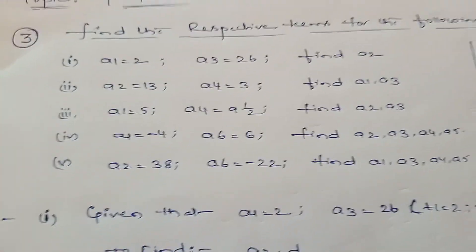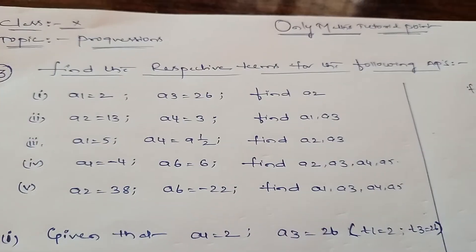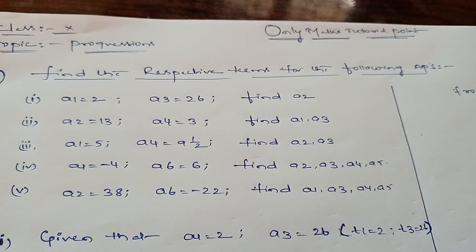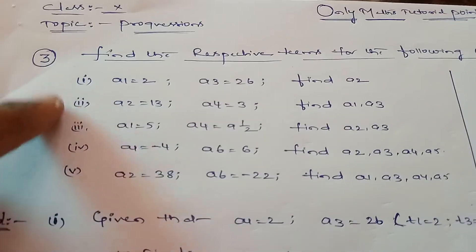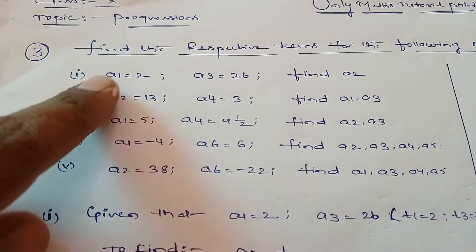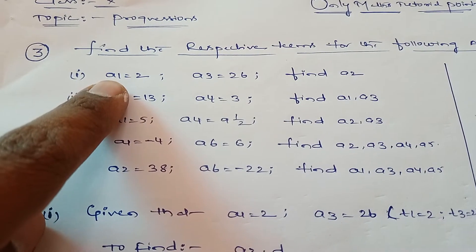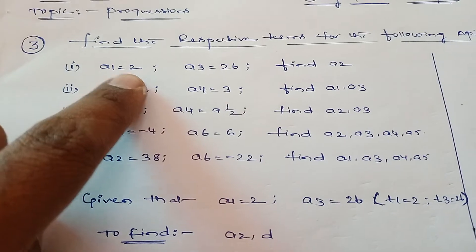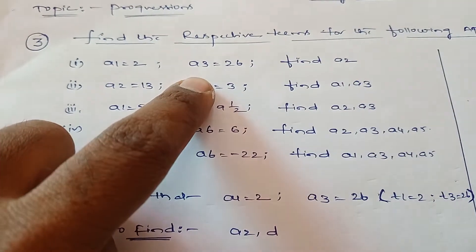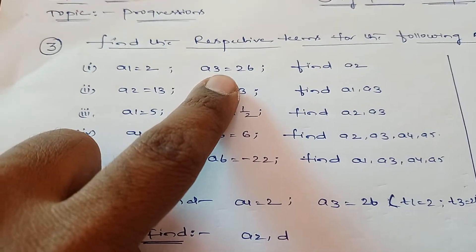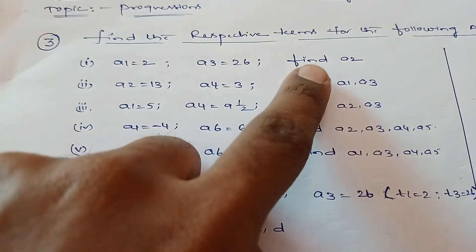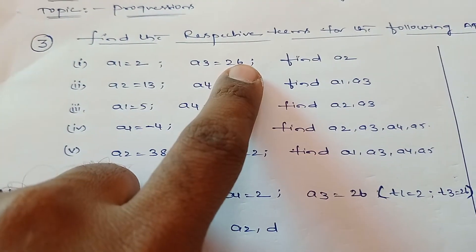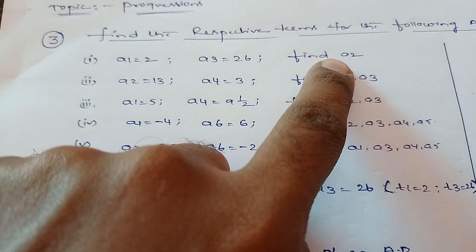Find the respective terms for the following APs. They gave total five questions. The first one: first term a1 equals 2, a3, the third term, equals 26. They are asking to find the second term. They gave first term and third term, they are asking to find the second term.